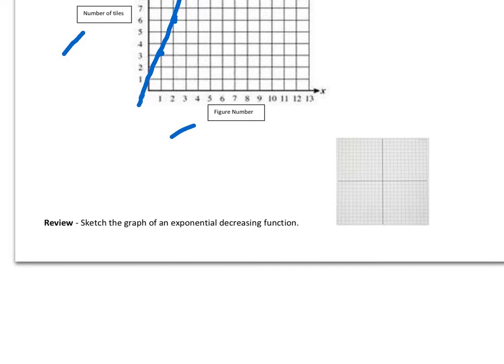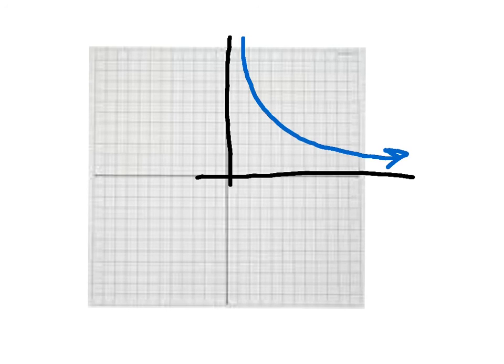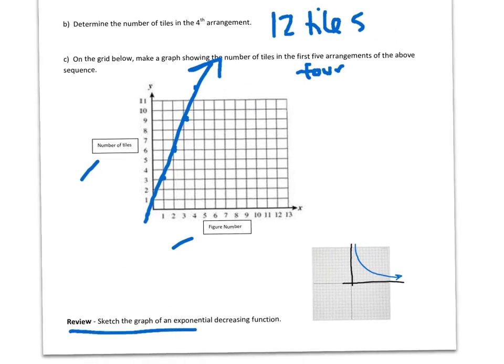And then a quick little review. Sketch the graph of exponential decreasing function. Let's blow this graph up. So what we've seen is we're usually using just this quadrant of the graph so far. So we can do that. And exponential decreasing, I know it's going down. And since it's exponential, I know that it's not a straight line. So I'm going to do something like that. And that's it.